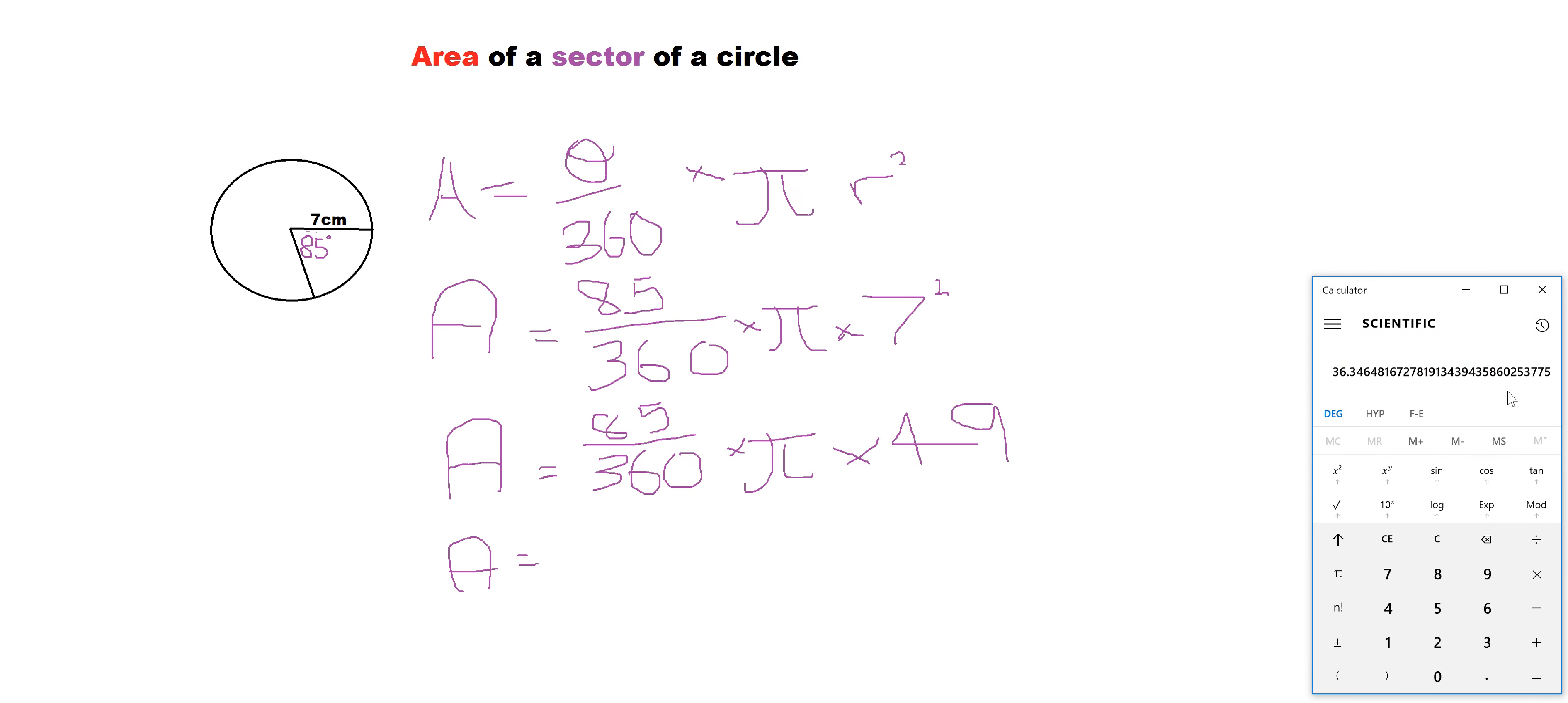So I'm going to leave that one as 36.35 is my answer, 36.35. And then I need to remember to add my units, centimeters squared. And that is how I calculate the area of a sector of a circle.